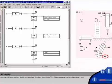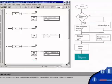As soon as the slider reaches its basic position, the last transition T9 of the sequence chain becomes true. Basically the sequence chain can now be terminated, or a further sequence chain be started. In our example, the chain is processed cyclically, meaning another work operation starts in the first step S1 of the sequence chain.